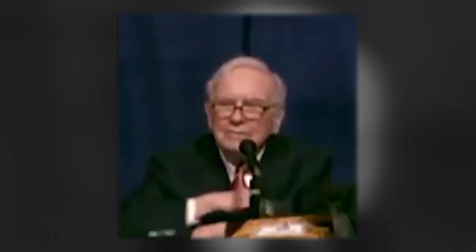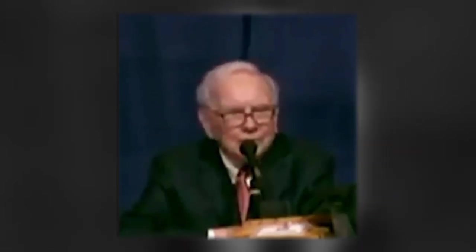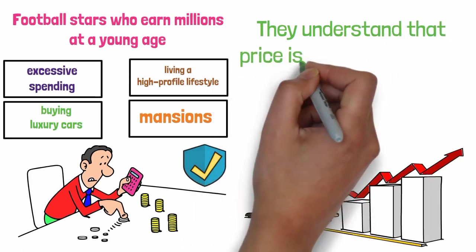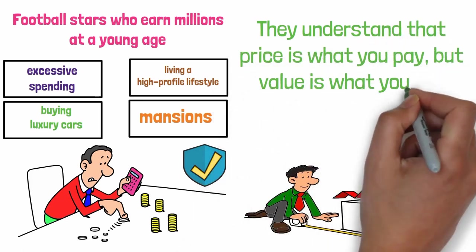You could have a cube, if you owned all the gold in the world, you could have a cube that would be 67 or 68 feet on a side, and you could get a ladder and you could climb up on top of it and say, I'm sitting on top of the world. You could fondle it, you could polish it. They understand that price is what you pay, but value is what you get.